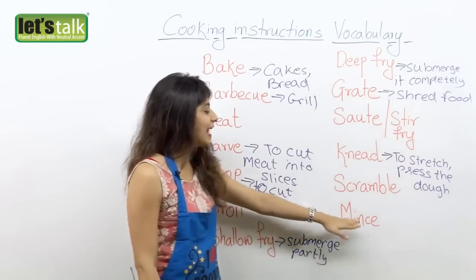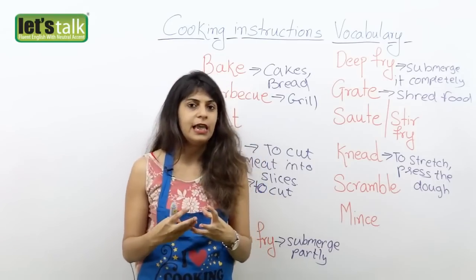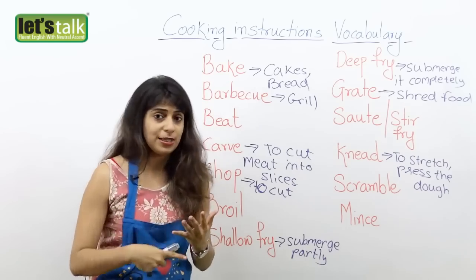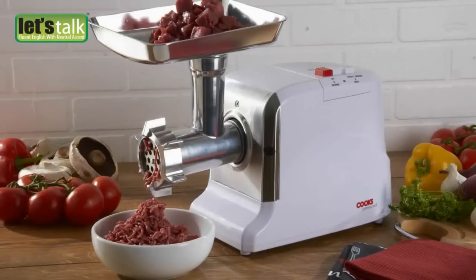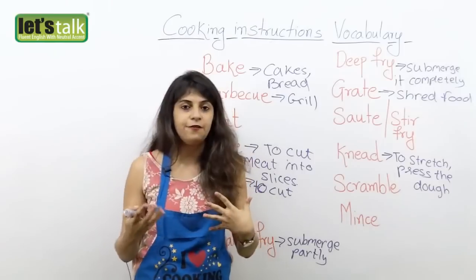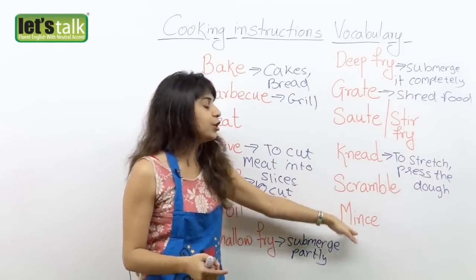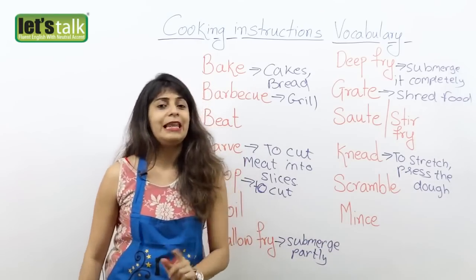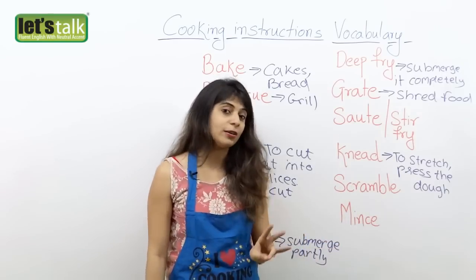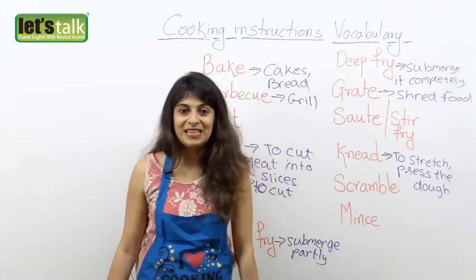And then the last one is mince. Mince is when you particularly cut your veggies or meat into extremely small pieces. In fact, we make use of a machine to mince your meat because it's not easy to do by hand. Yes, probably a grater or shredder would help, but to mince it into very, very small particles, you definitely need a machine. So to cut your veggies or meat into extremely small pieces is what mince means.